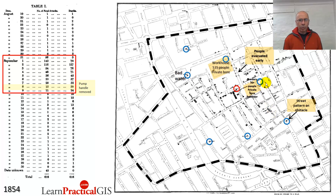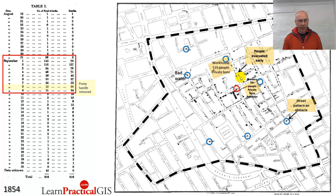He also asked: how come there are relatively so few deaths in the Poland Street area? It's so close to the pump. What he discovered is that basically, as soon as the outbreak occurred, this area was pretty much evacuated within a day or two. So there weren't people around to get infected.